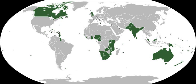The Commonwealth's objectives were first outlined in the 1971 Singapore Declaration, which committed the Commonwealth to world peace, promotion of representative democracy and individual liberty, the pursuit of equality and opposition to racism, the fight against poverty, ignorance, and disease, and free trade. To these were added opposition to discrimination on the basis of gender by the Lusaka Declaration of 1979, and environmental sustainability by the Langkawi Declaration of 1989. These objectives were reinforced by the Harare Declaration in 1991. The Commonwealth's current highest priority aims are on the promotion of democracy and development, as outlined in the 2003 Aso Rock Declaration, which built on those in Singapore and Harare.